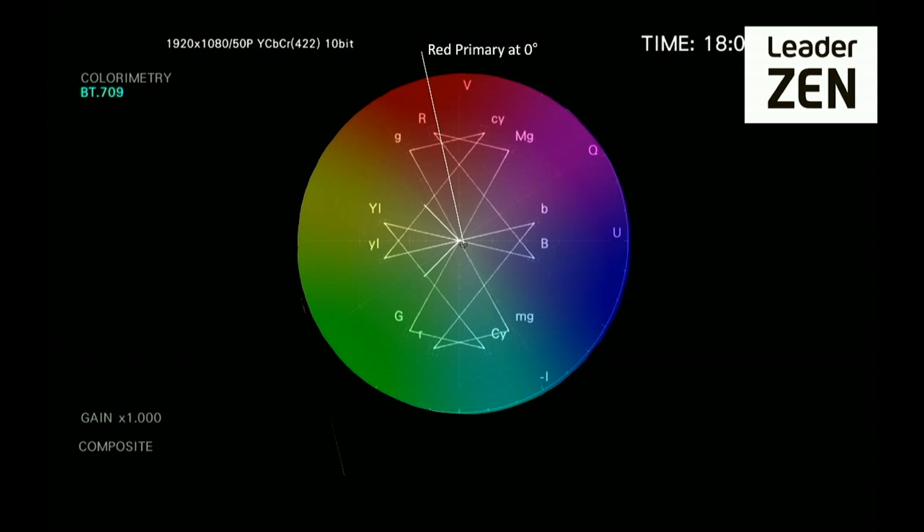The vectorscope display starts with the red primary at 0 degrees, passing counter-clockwise through green at 120 degrees and blue at 240 degrees before returning to red at 360 degrees.